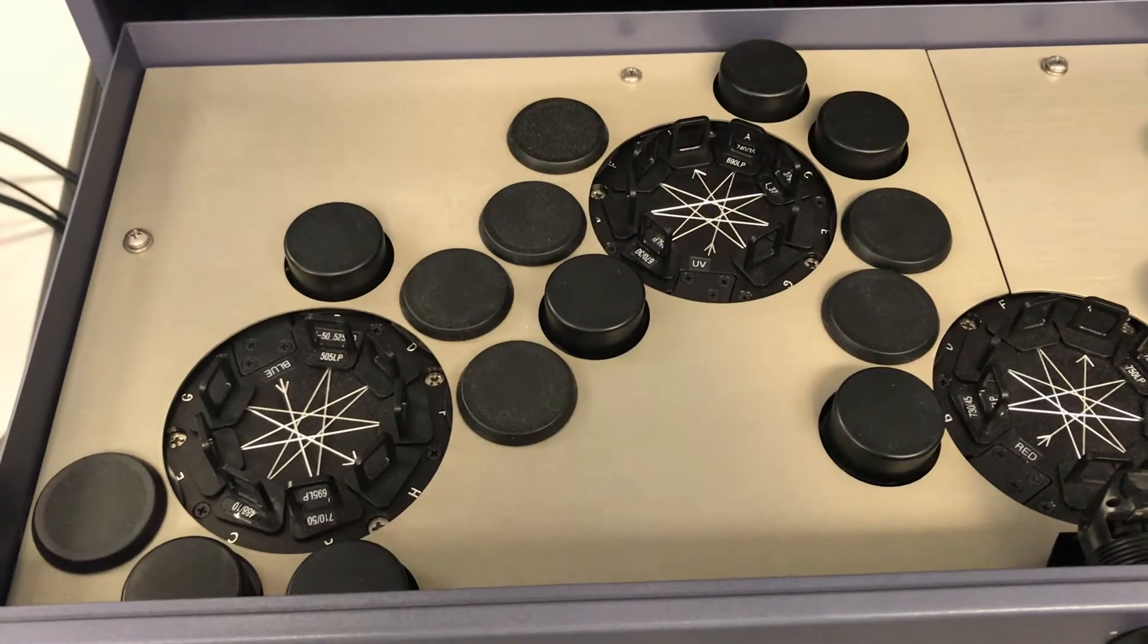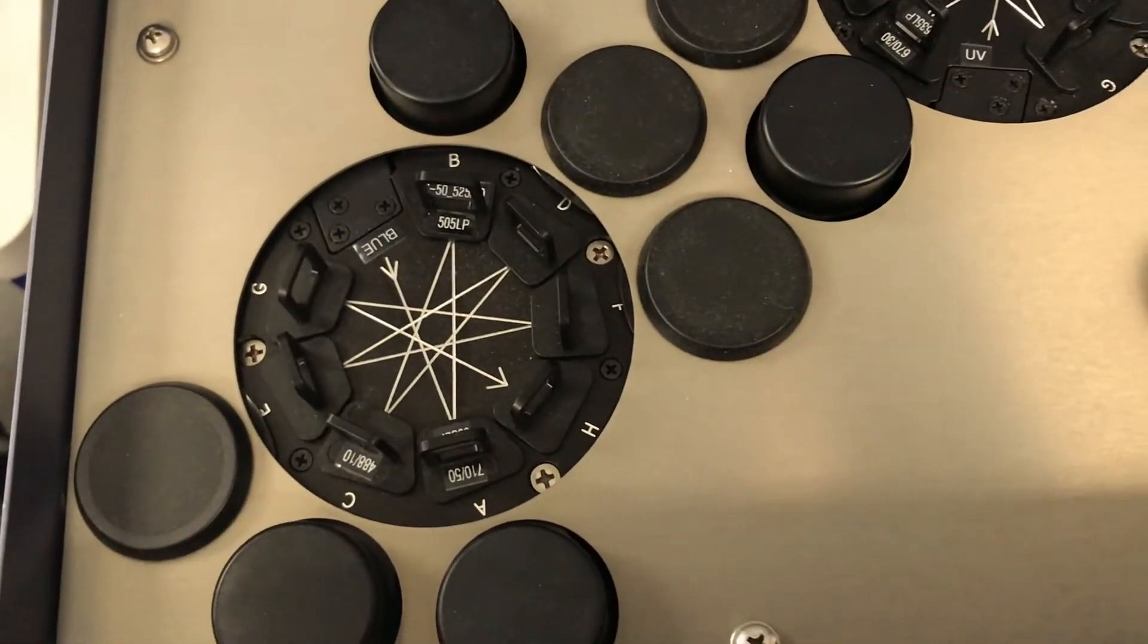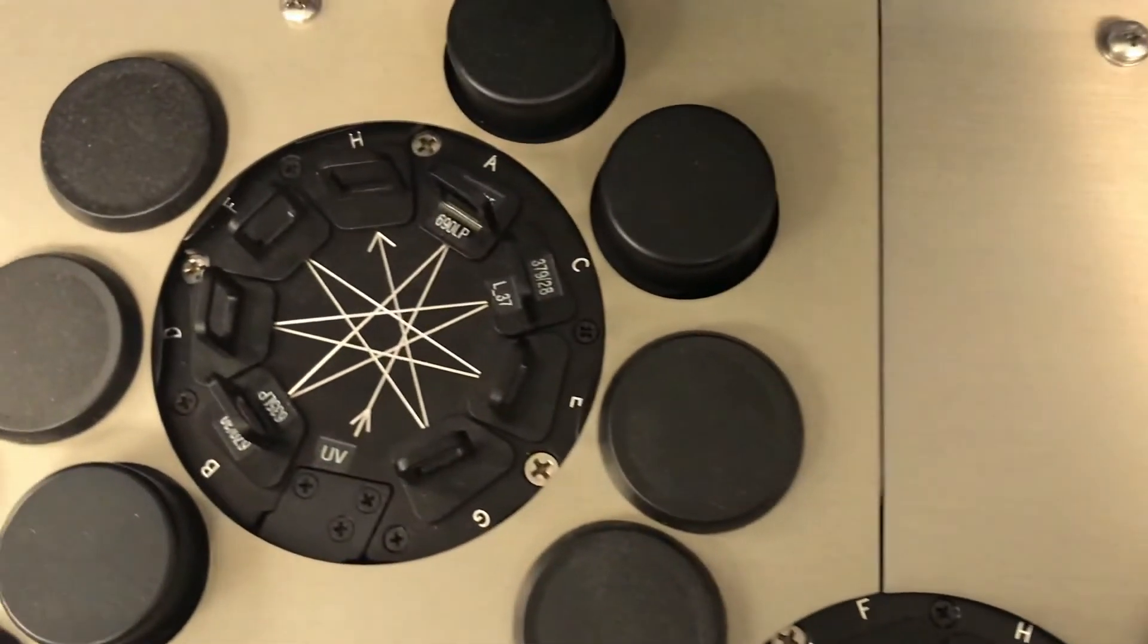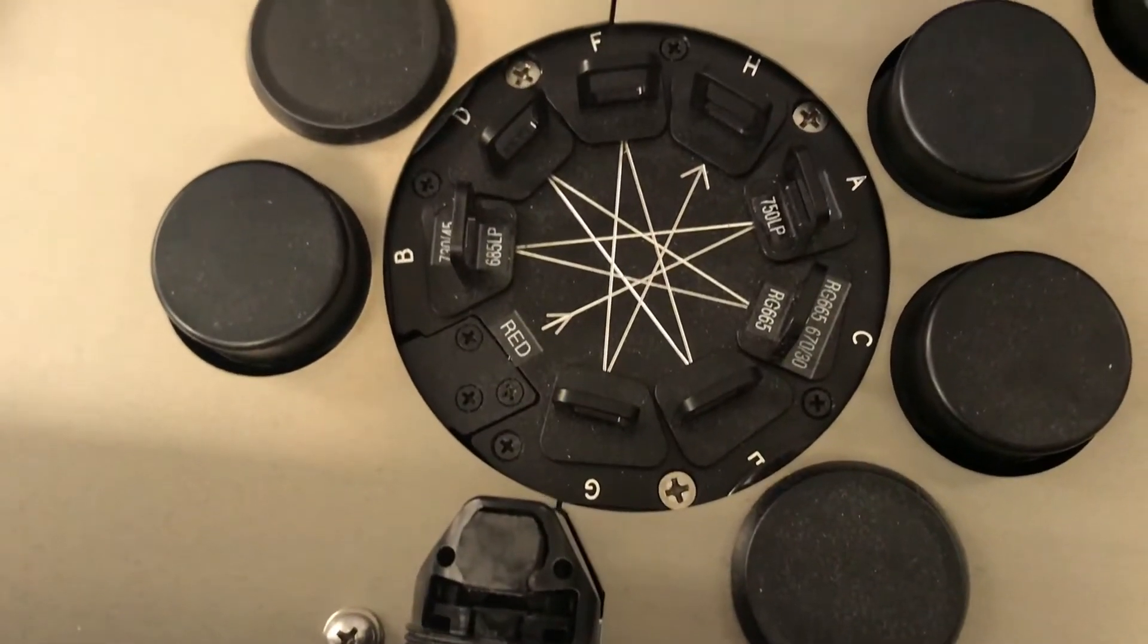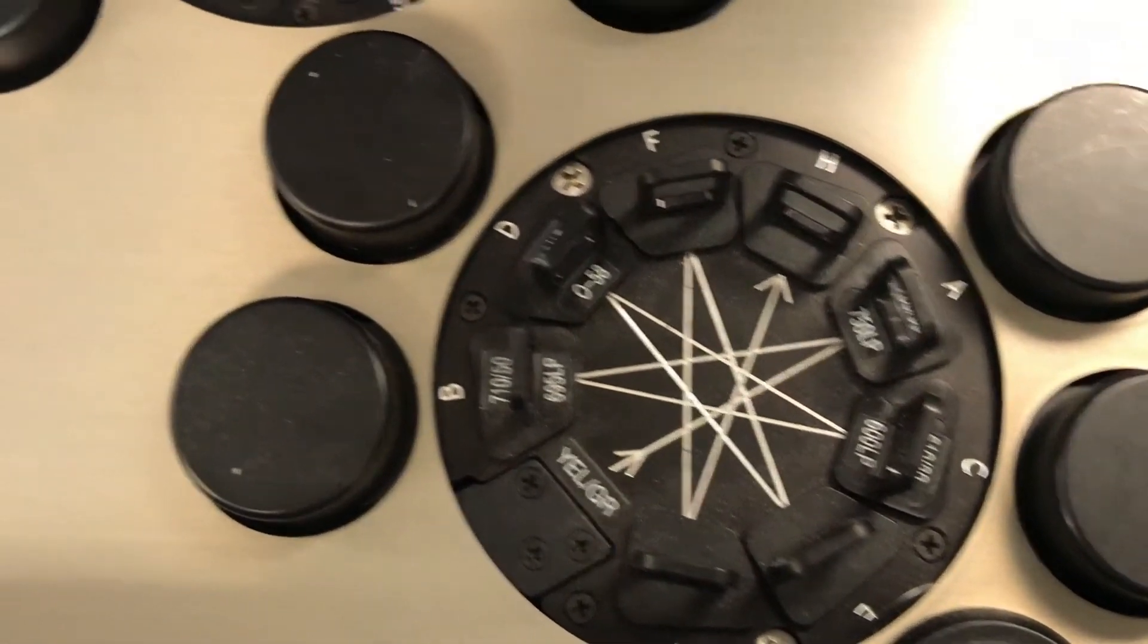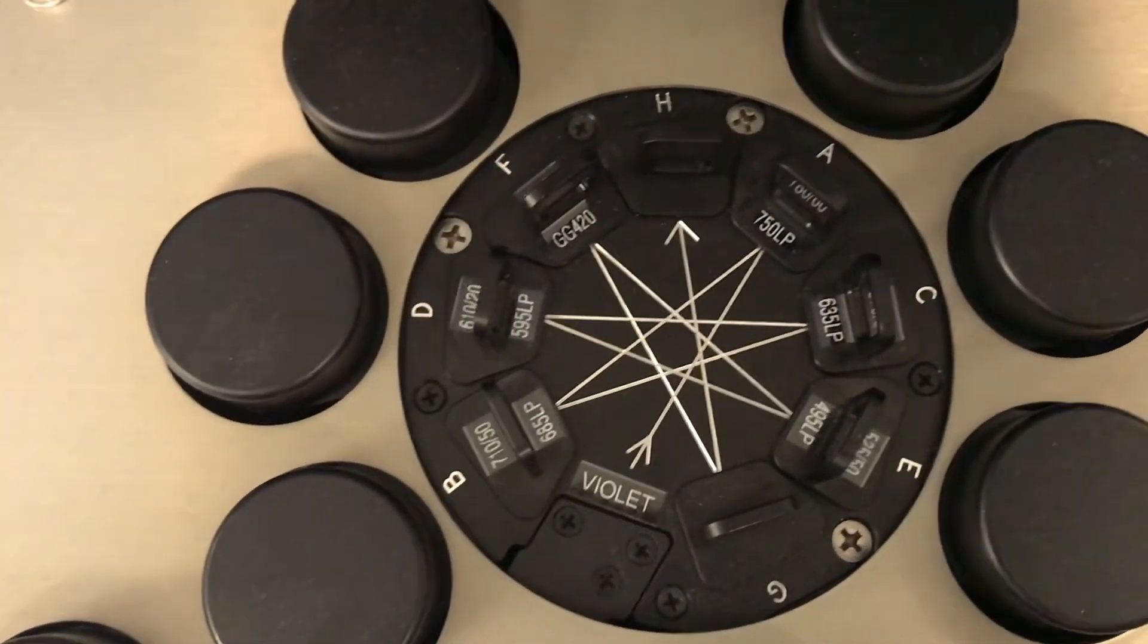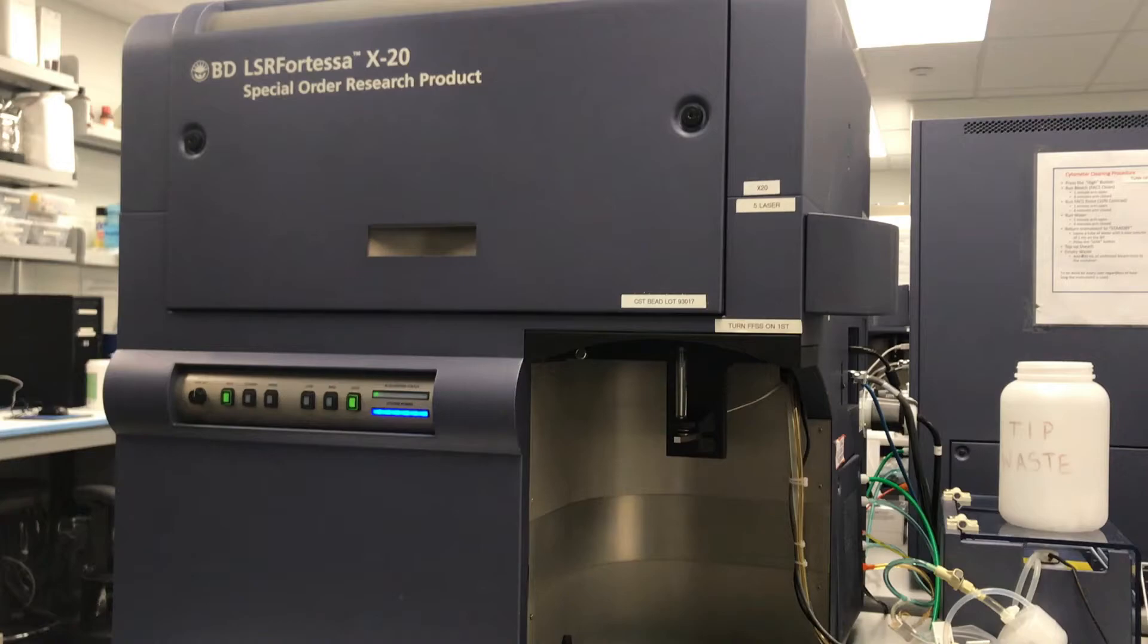The examples here are using X20 for TESA from BD company. As we can see, there are different lasers. The first one we're seeing over here is a blue laser. The second one is a UV laser. The third one over here is a red laser. And then the next one is a yellow-green laser. The last one we're seeing over here is a violet laser. These lasers all have different filters.